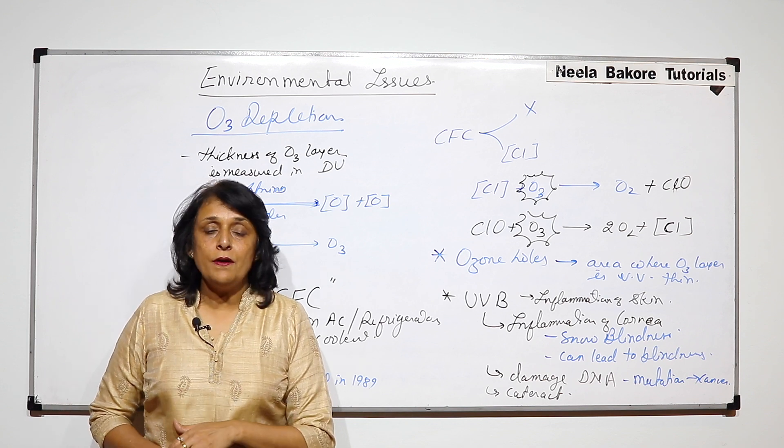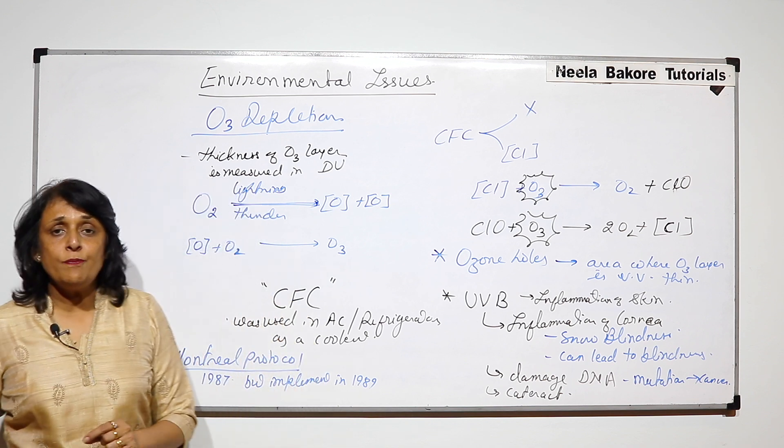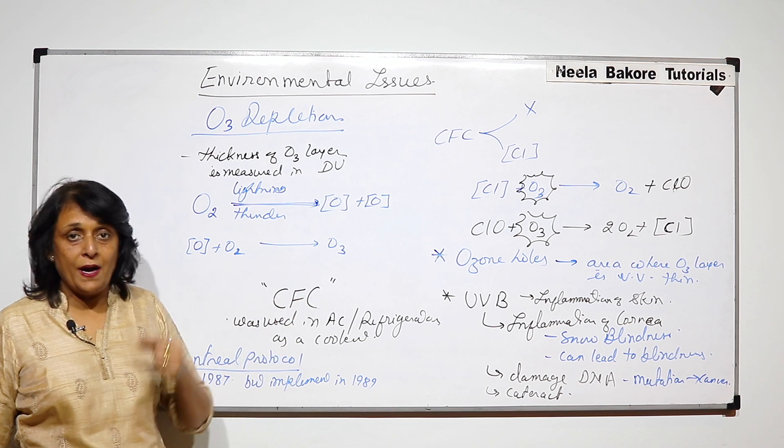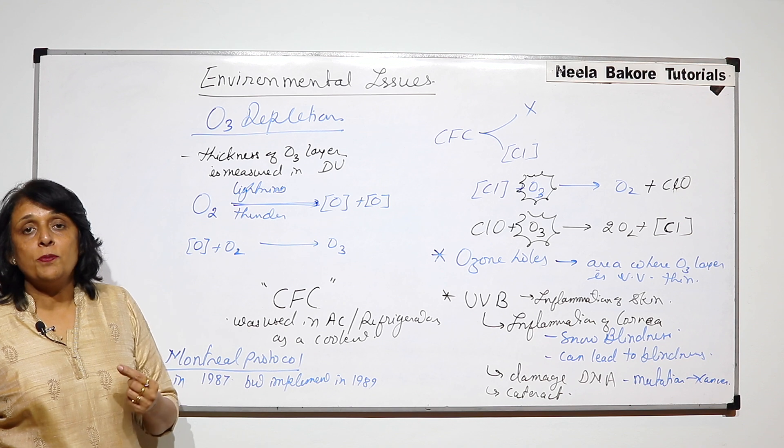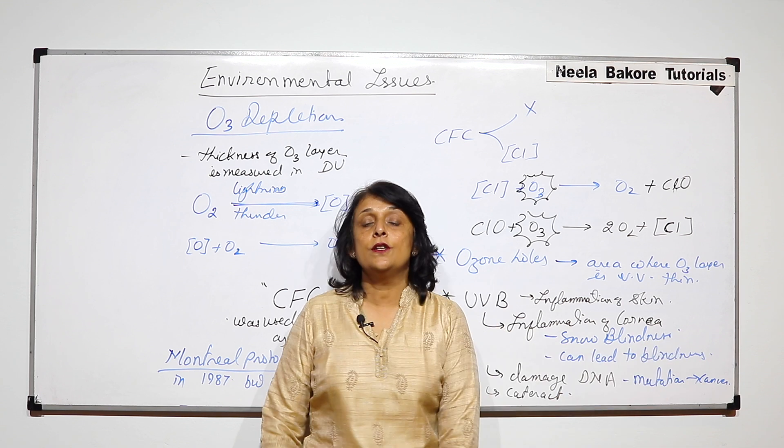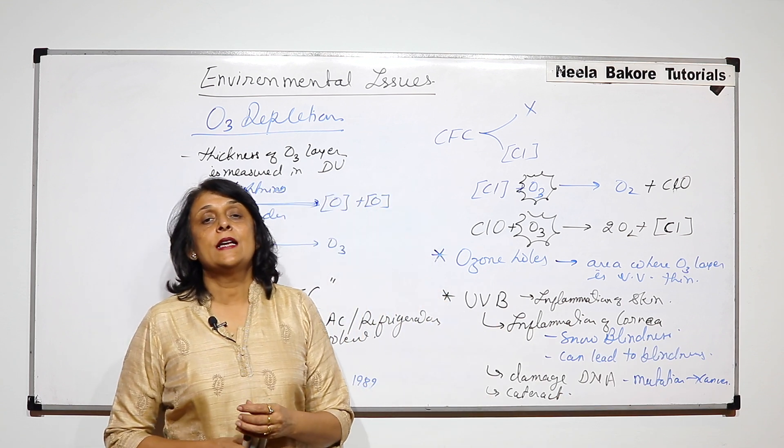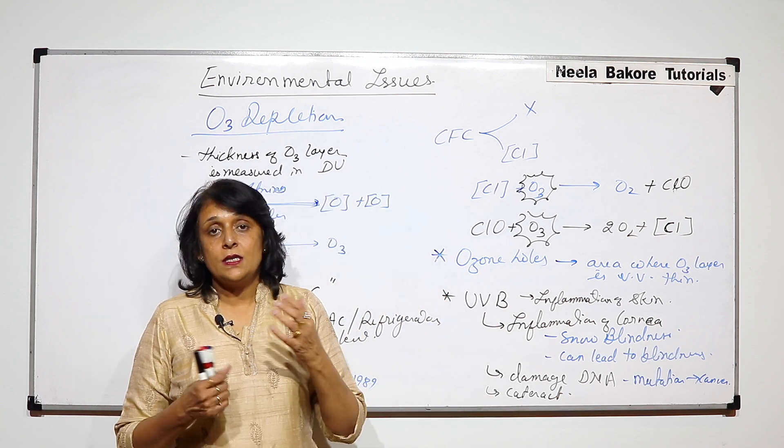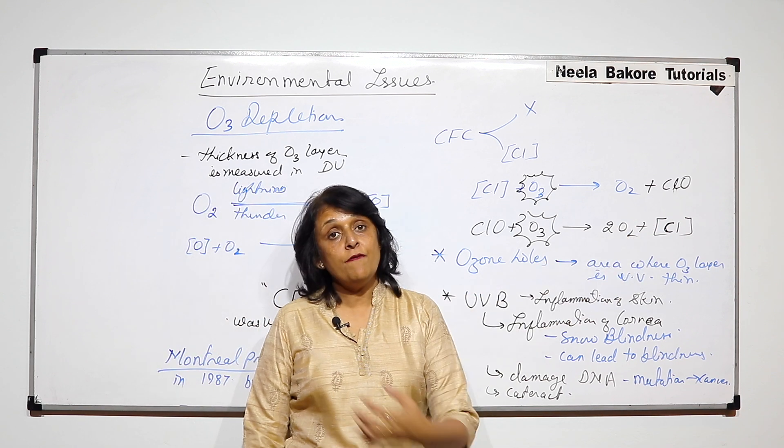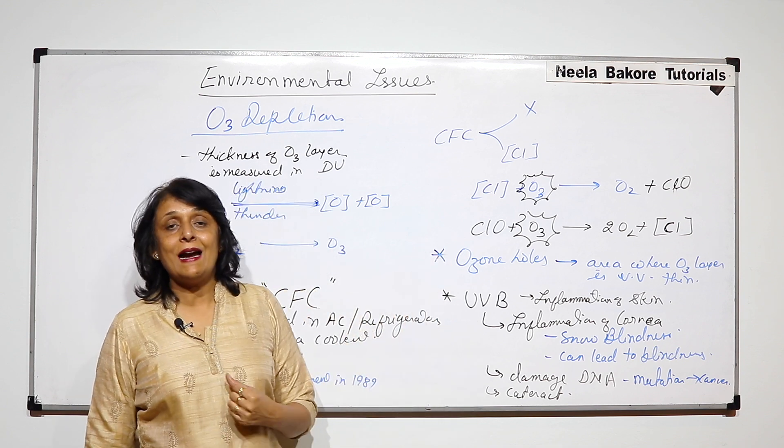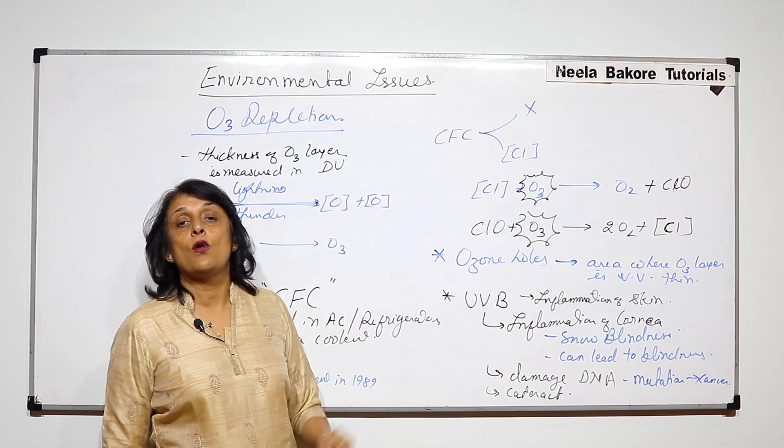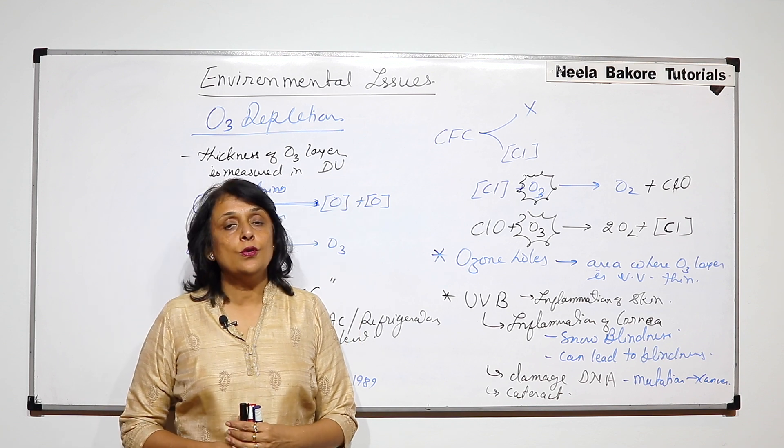And now, the countries are taking steps so that such substances are not released in the atmosphere. But a better option would be if this chlorine atom is removed. So research is also going on where scientists are working on something that can bind with this chlorine atom. So if we are able to remove this chlorine atom, the free chlorine atoms, then this depletion of ozone layer is going to stop.